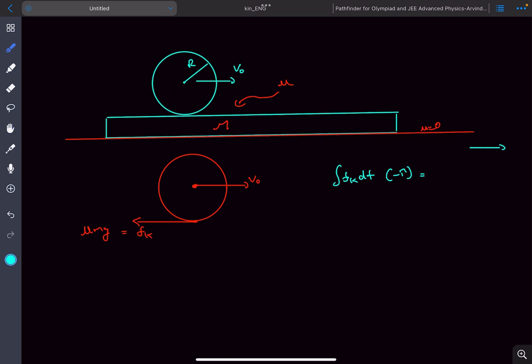This equals the change in momentum: mv minus mv0 in the i cap direction. At the time it starts rolling, the center has velocity v and angular velocity omega. From this equation, we can substitute the friction force value and cancel m on both sides to get mu g times delta t equals v0 minus v. This is equation number one.